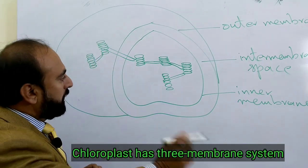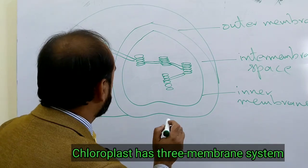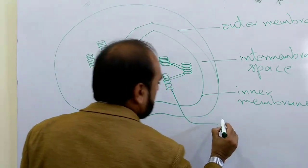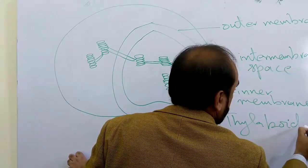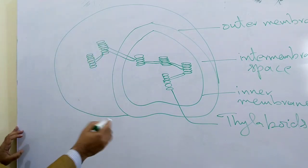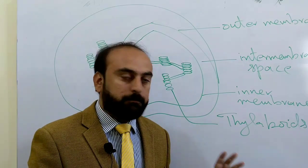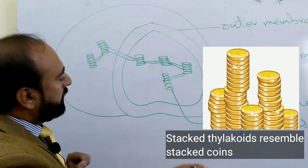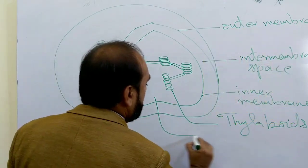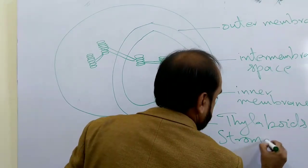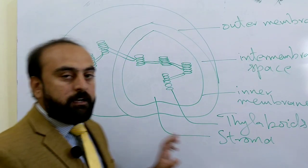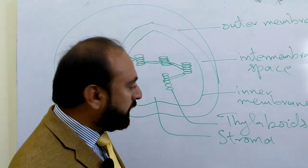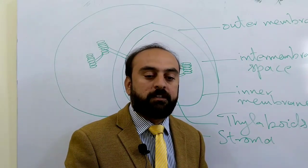Then we have a third membrane system called the thylakoid. Thylakoid literally means 'little sac.' This is the most striking feature of the structure of chloroplasts — it is an elaborately folded system of photosynthetic membranes.